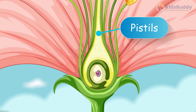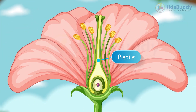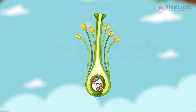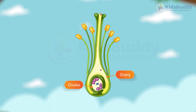Pistils are the female reproductive parts of the flower. They consist of three parts: the stigma, the style, and the ovary. The stigma is the sticky part that receives pollen. The style is the tube-like structure that connects the stigma to the ovary. And the ovary contains the ovules, which will eventually develop into seeds.